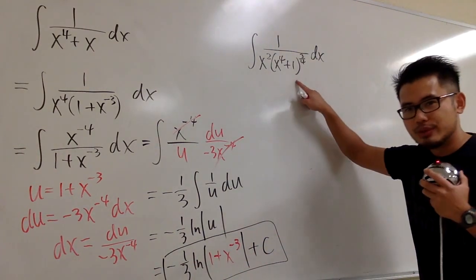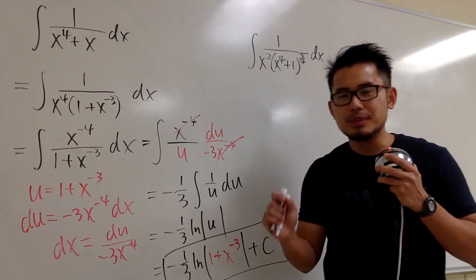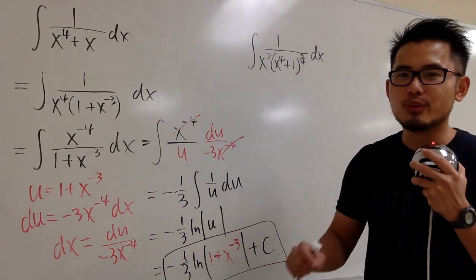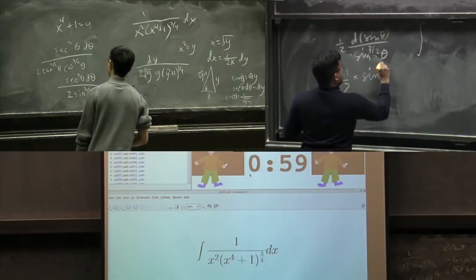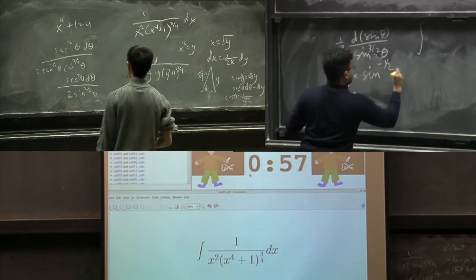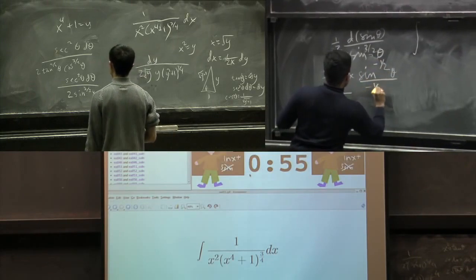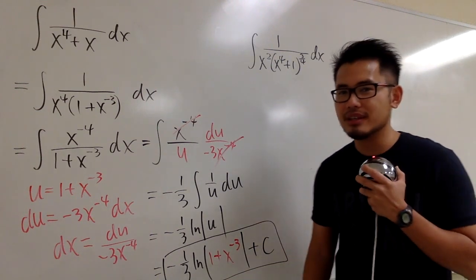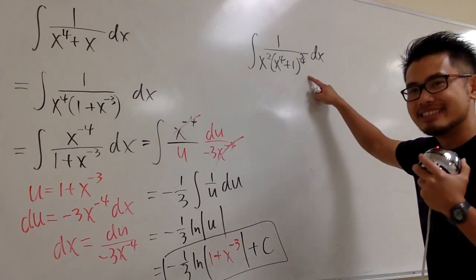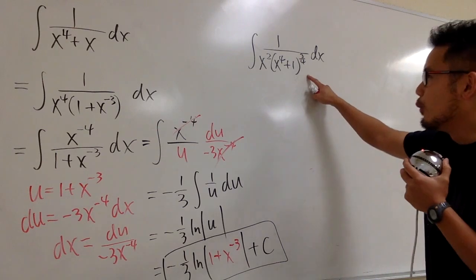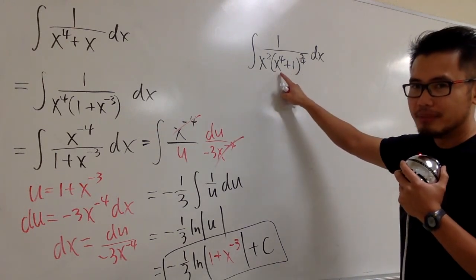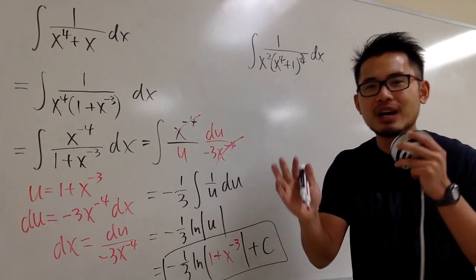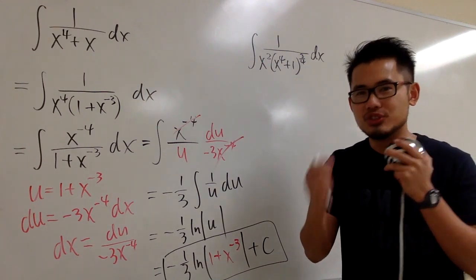This question has a story — it happens to be one of the questions on the MIT integral bee. You can check out the link in the description below. The key insight is to factor out the bigger power inside, and everything works out nicely.